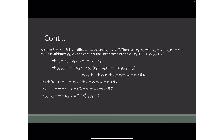Assume S equals s plus capital U is an affine subspace, and that v₁ through vₖ are elements of capital S. Then there exist u₁ through uₖ such that v₁ equals s plus u₁ and vₖ equals s plus uₖ. We take scalars φ₁ through φₖ and consider the linear combination φ₁u₁ plus φ₂u₂ plus φ₃u₃ and so on until φₖuₖ, all of which lie in capital U.